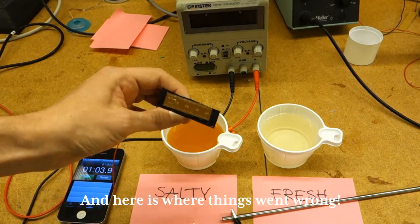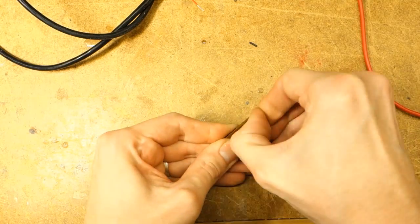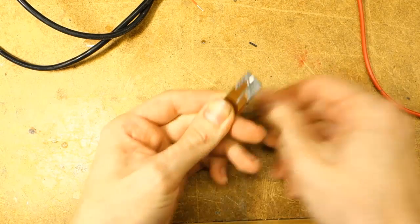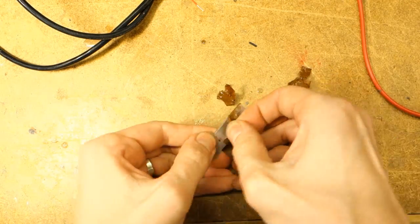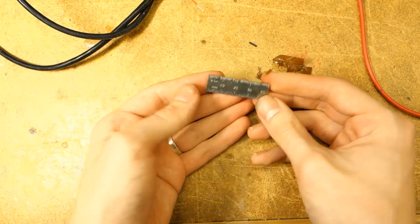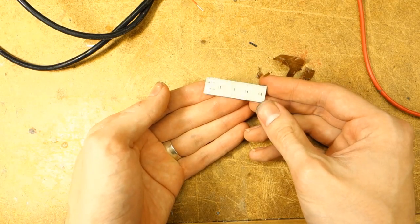Once etched, just simply rinse off the salt water in the fresh water cup. Unwrap the tape and look at the really poor quality etching.